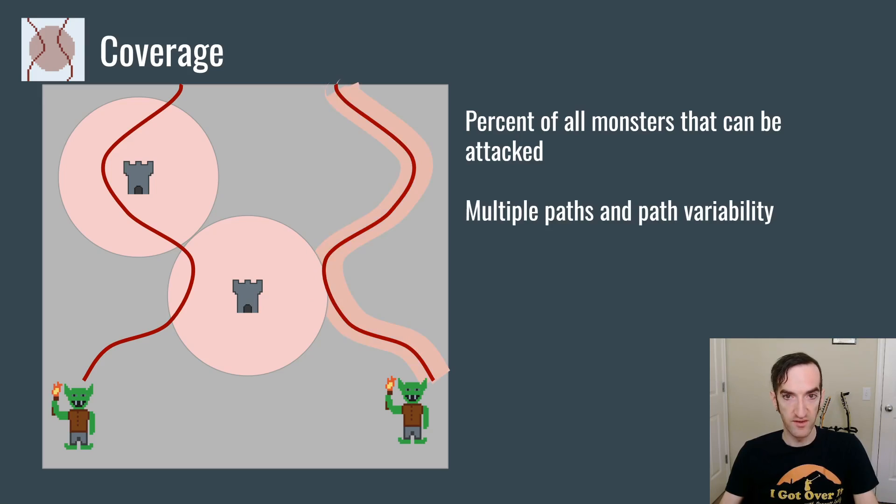It's worth noting that coverage can be affected both by having there be multiple paths, but also by path variability. You can see here if the monster on the right has a variable path where they can wind up cheating to the right, then they can dodge that tower unless this tower placement does not have full coverage of every monster.